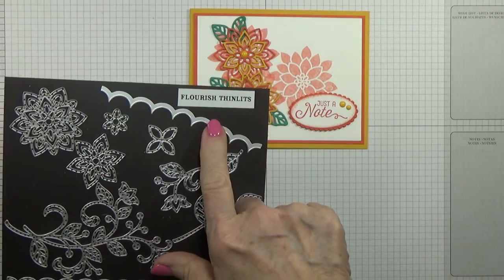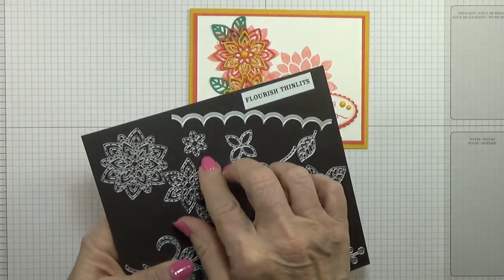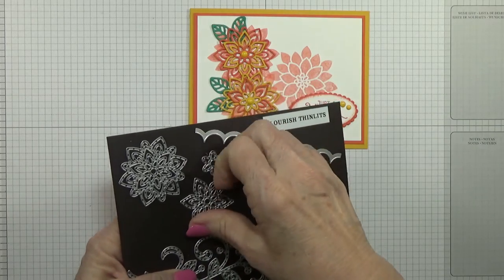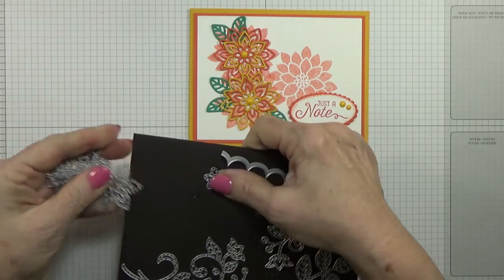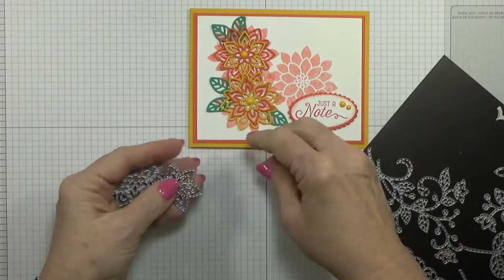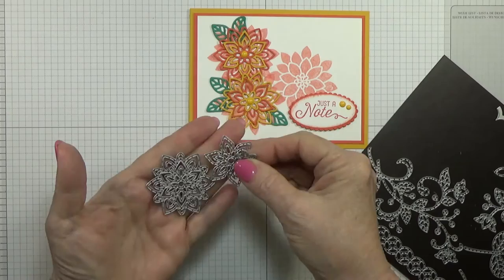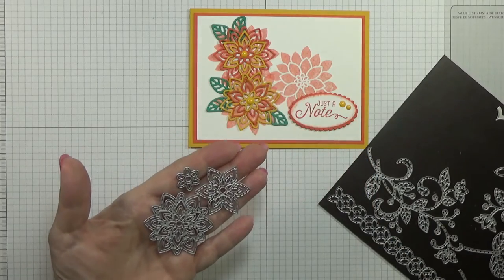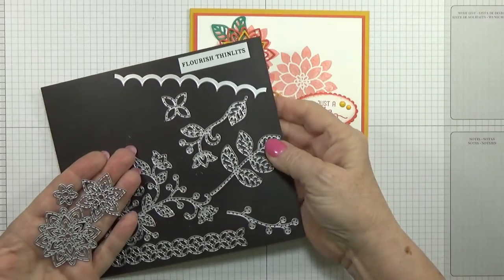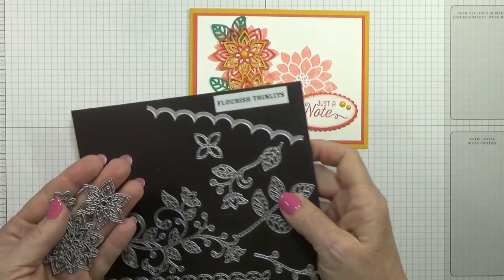I used the Flourish Thinlets, and what I used was these flowers right here. Let me get them off right quick so I can show you. These three flowers right here, and then I used these leaves right here and I cut these leaves up. I'll show you that when we get to it.